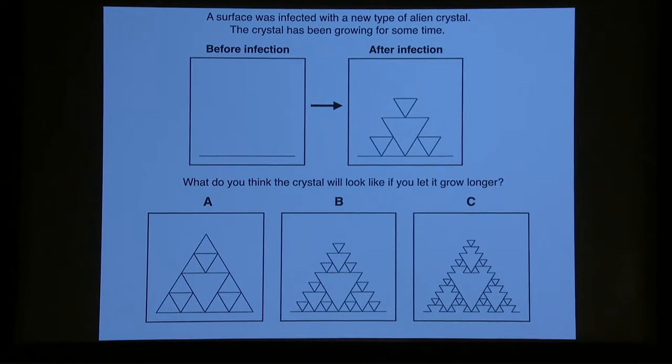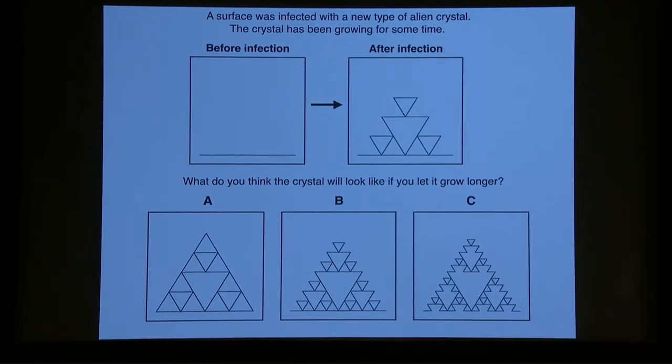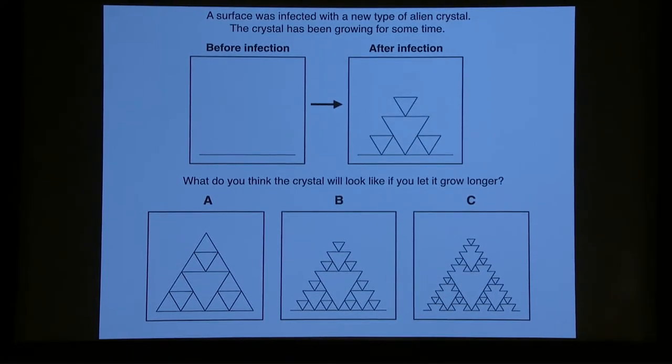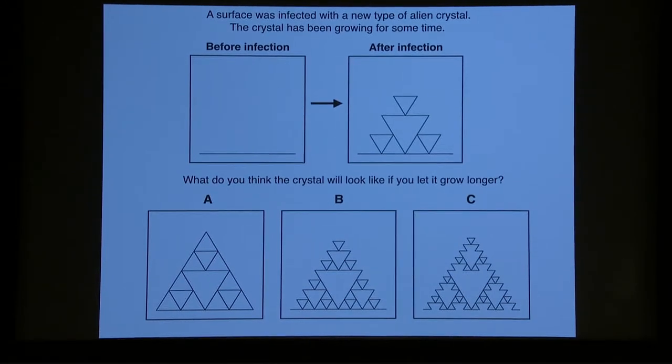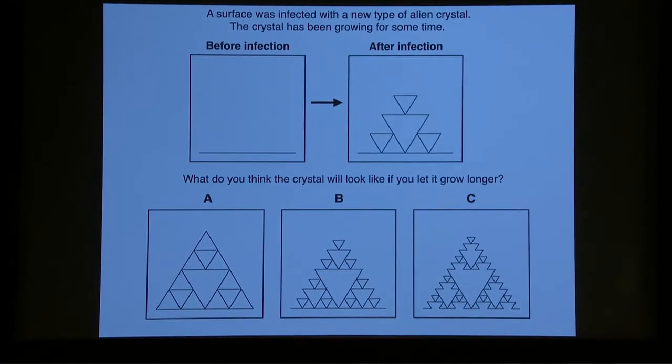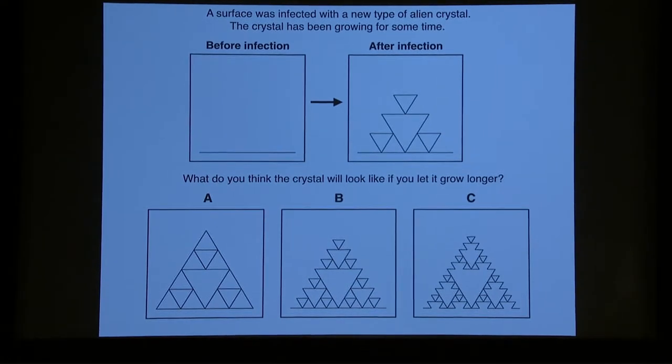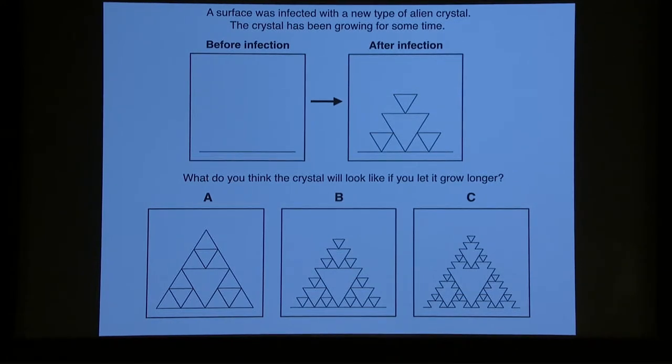So here's the setup that we used. We told participants that a surface was infected with a new type of alien crystal, and the crystal's been growing for some time. So that was the surface, and then now it's grown into that figure. And then we asked, what do you think the crystal's going to look like if you let it grow longer? This is an audience participation moment. I'm going to ask you to raise your hand about which of those you think is what the crystal's going to grow into. So can you raise your hand if you think A is what it's going to grow into? What about B? Okay, lots of computer scientists in the room.